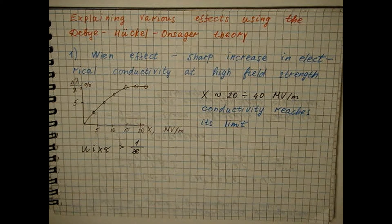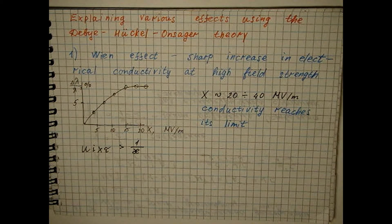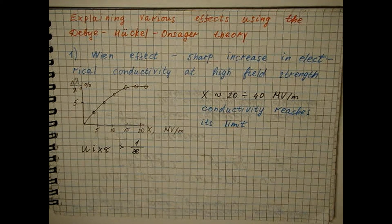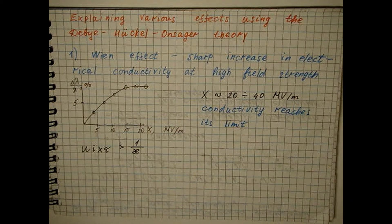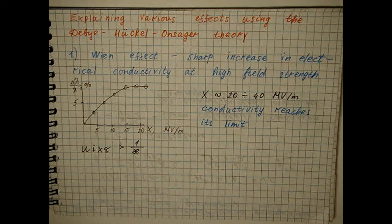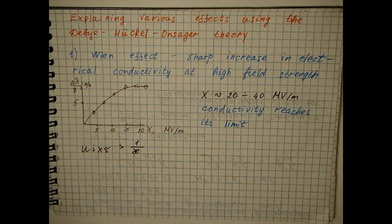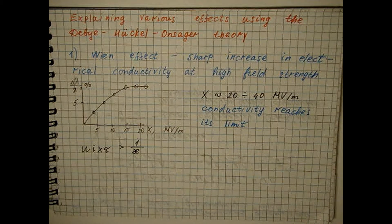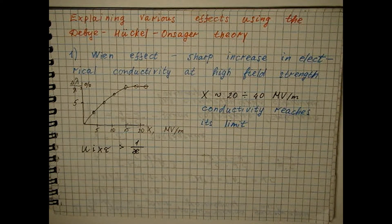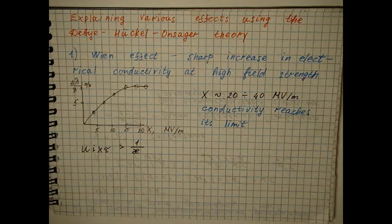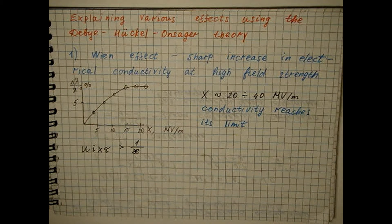In solution of weak electrolytes, the Wien effect is much stronger. In this case, the electrical conductivity increases tenfold. This is due to the dissociation of a weak electrolyte under the action of a strong electric field. The phenomenon that Faraday pointed out, without assuming that this requires such significant field strength.